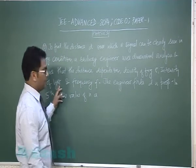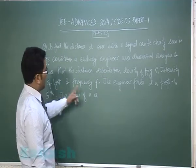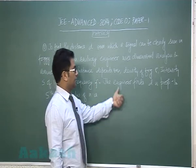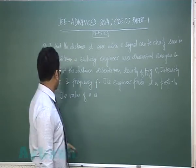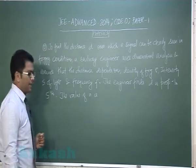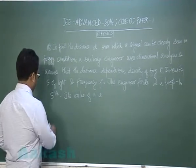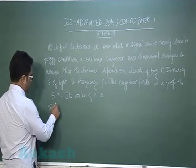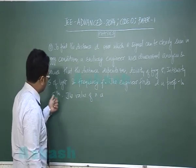The distance depends on intensity S of light and frequency of light. The engineer finds D is proportional to S raised to the power 1 by n. We need to find the value of 1 by n and finally the value of n.